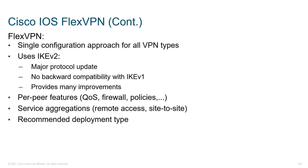FlexVPN gives us a single configuration approach for all the VPN types, and it's a protocol update. It's going to leverage IKE version 2, which gives us the open standard-based connectivity for remote access clients. It also gives us updated support for all the different features we need to make IPSec work like it should, and also offers greater security through DoS prevention.